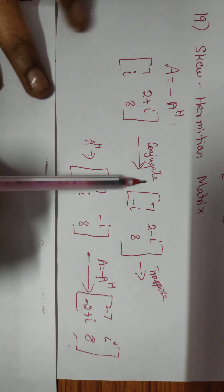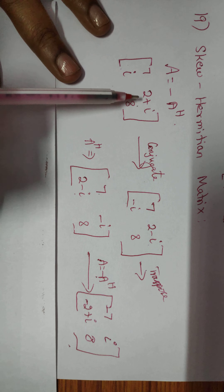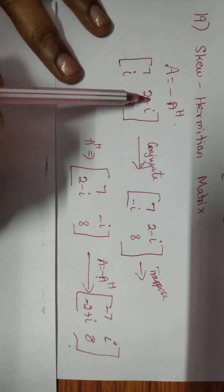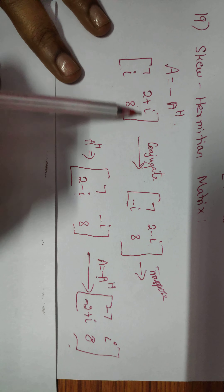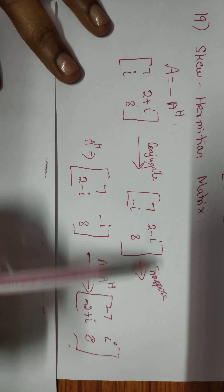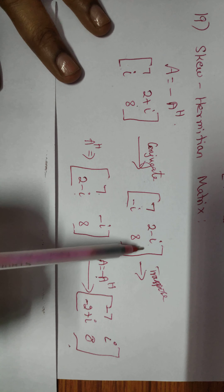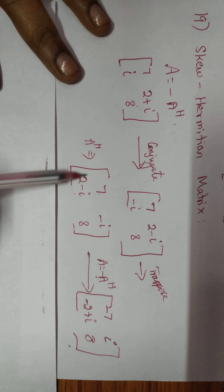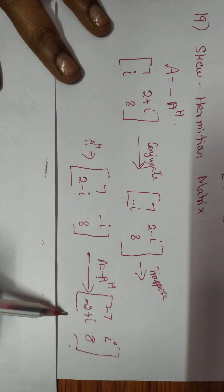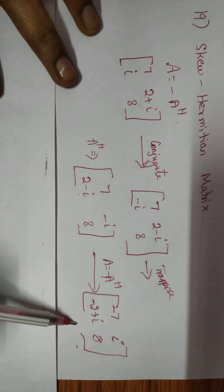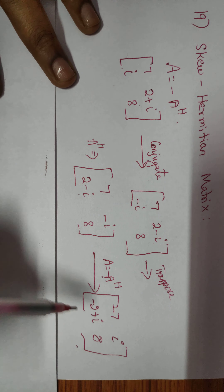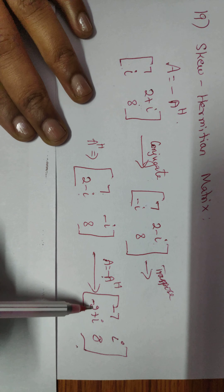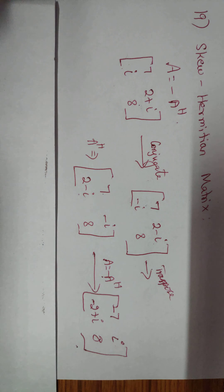To summarize the steps: first, perform the conjugate operation by converting the sign of the imaginary parts from positive to negative. Then perform the transpose operation, converting row values into column values. Finally, multiply by minus on the Hermitian matrix. In a skew-Hermitian matrix, the diagonal elements will be negative or zero, and non-diagonal elements will be real or complex values.